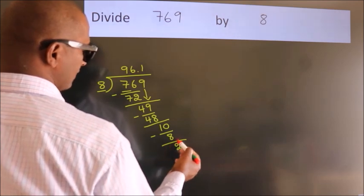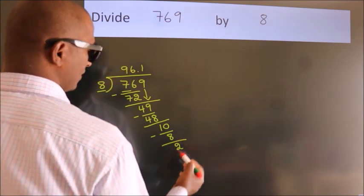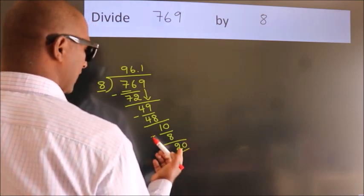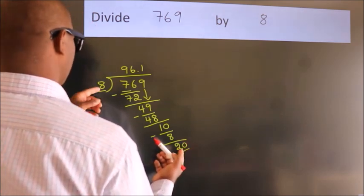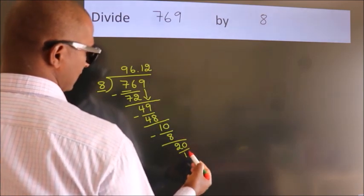After this, we already have the decimal, so directly take 0. So 20. A number close to 20 in the 8 table is 8 twos, 16.